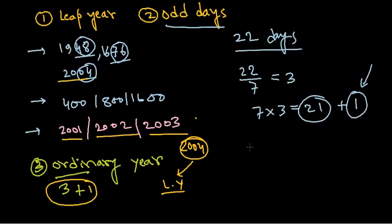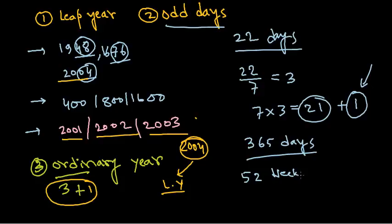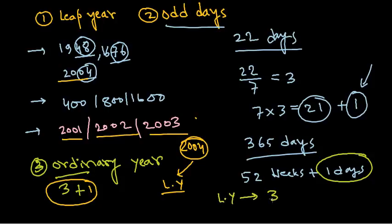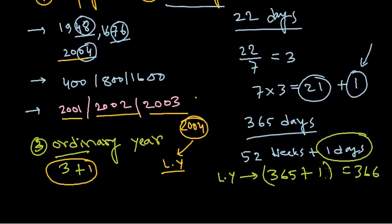An ordinary year consists of 365 days, which contains 52 weeks plus 1 day, so every ordinary year has one odd day. A leap year consists of 366 days — one day extra in February (29 days instead of 28). So a leap year has 52 complete weeks plus 2 days, meaning a leap year contains two odd days.